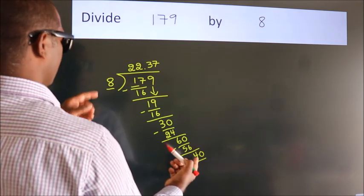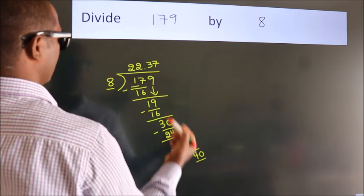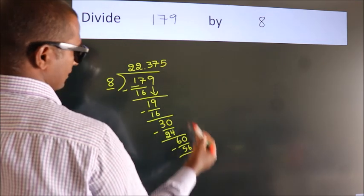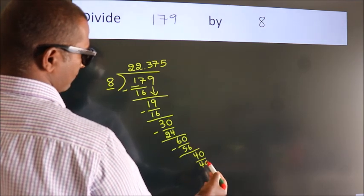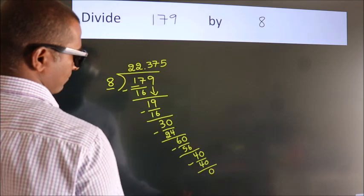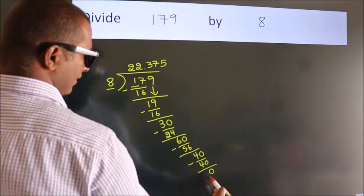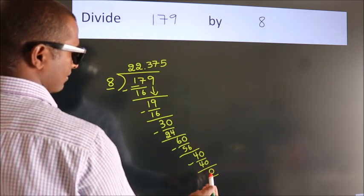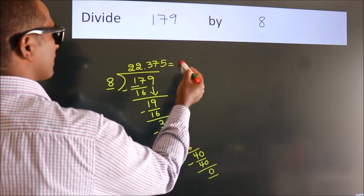When do we get 40 in the 8 table? 8 fives, we get 40. Now we subtract, we get 0. Here we got remainder 0. So this is our quotient.